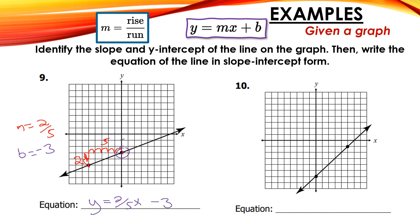Next, finding my slope starting at the point closest to the left. Going up: 1, 2, 3, 4, 5 — my rise is 5. Then going over: 1, 2, 3, 4, 5 — my run is 5. So my slope — 5 over 5 — reduces to 1. I find b where the graph crosses the y-axis: 1, 2, 3, 4, 5, 6 — so my b is 6. Since the slope is 1, instead of putting 1x, we just put x, because in algebra the understood coefficient of x is 1. So the equation is y equals x plus 6.